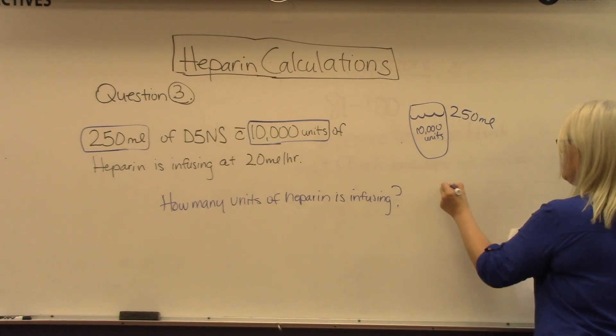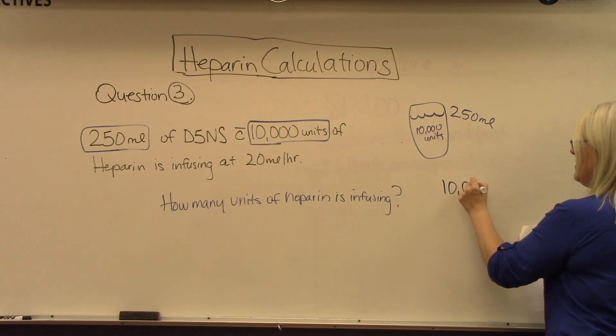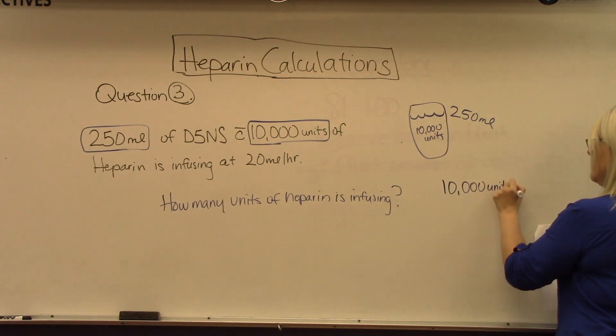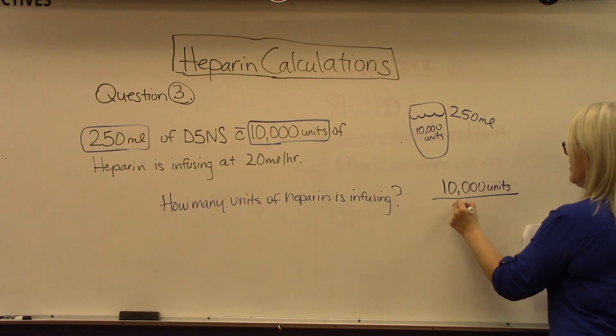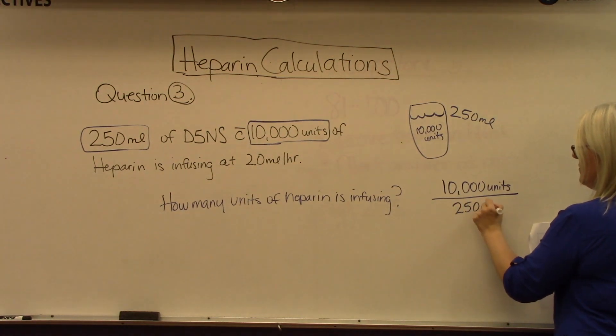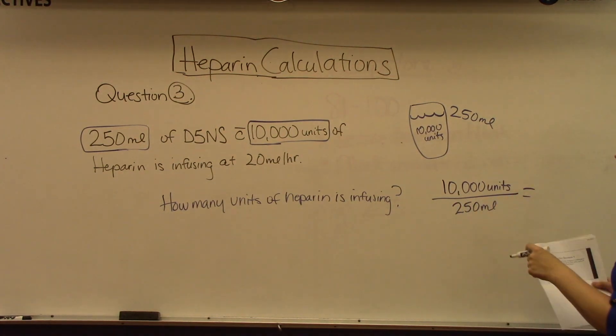We take that 10,000 units and divide it by our volume. That's going to give us how many units per milliliter, and it's 40 units per one milliliter.